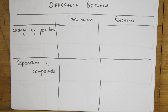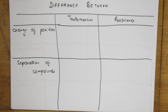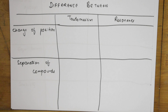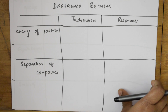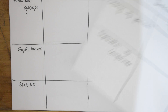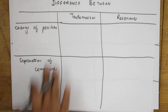Welcome back students to one more session. Today we will learn the differences between tautomerism and resonance. We have already seen the resonance concept and tautomerism, where there is a dynamic equilibrium existing between the keto and enol form. When writing differences, remember to write the criteria on the left-hand side — the basis on which we are going to differentiate.